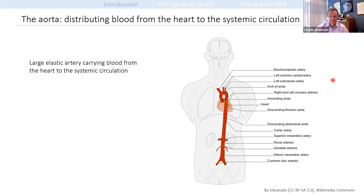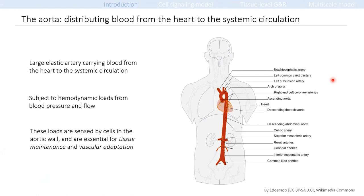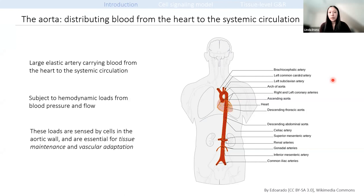The aorta is a large elastic artery and its purpose is to distribute oxygenated blood from the heart to the systemic circulation. As a structure, it's very robust in that it experiences loads from blood pressure and flow throughout our lifetimes. The cells within the aortic wall are able to sense and respond to these mechanical loads, and their responses are essential for maintaining its integrity, as well as for allowing it to adapt and respond to perturbations in loading.